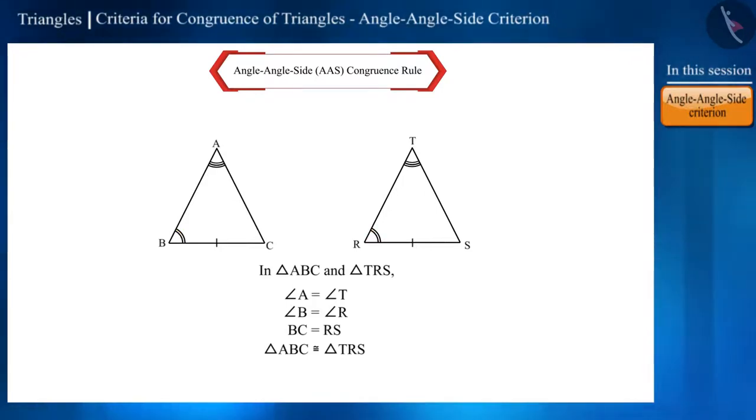And, if we are given that side BC is equal to side RS or side CA is equal to side ST, then these two triangles can be set to be congruent by the AAS congruence criterion.